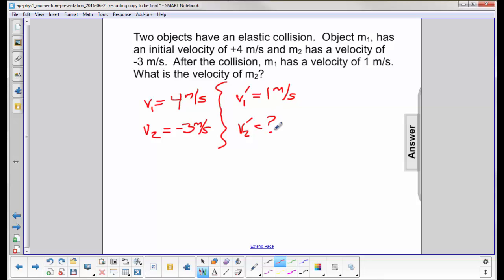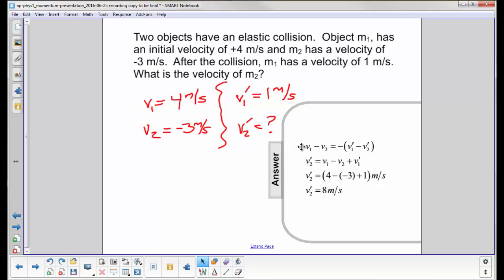Notice, no masses are given, nor are they needed. Because when you have an elastic collision, the relative velocity of the objects before the collision is equal to the negative of the relative velocity afterwards.